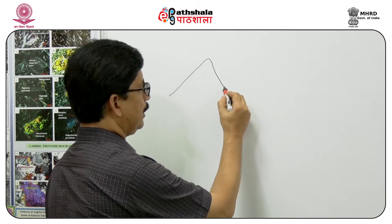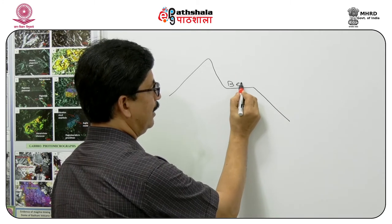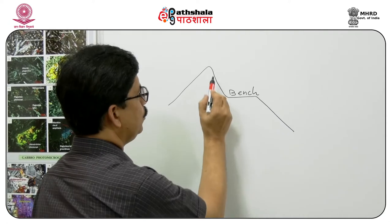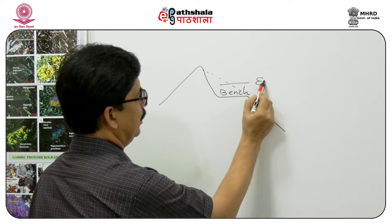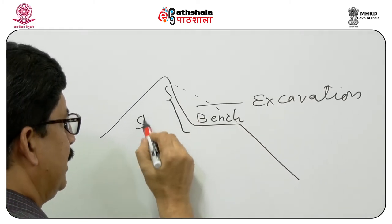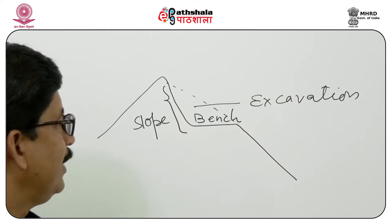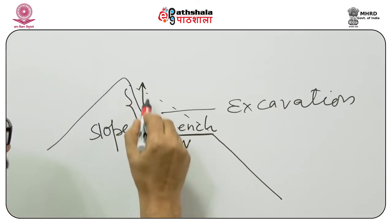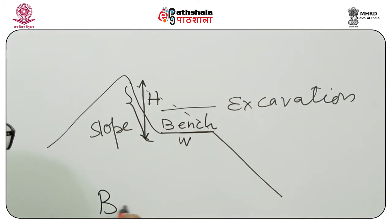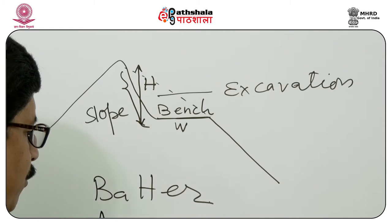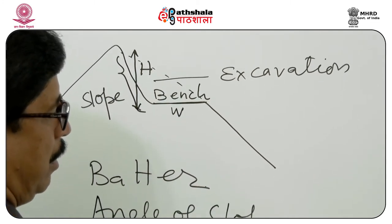The biggest issue comes when we move into hilly regions. There we need to create a space for the road or rail track called a bench. Creation of this bench is important because you may have to go for excavation. When we excavate, we create the bench and also the slope. The ratio of the bench width to its height is called the batter, and this batter is very important.